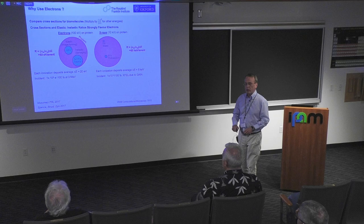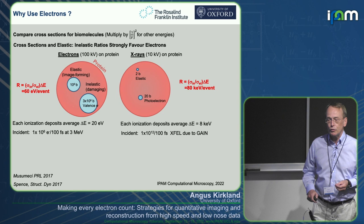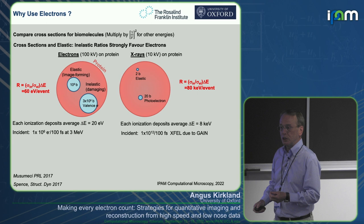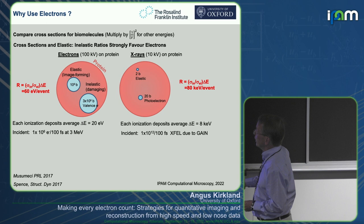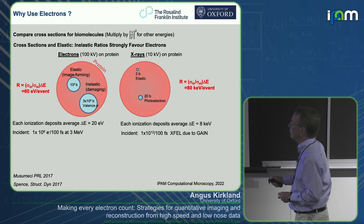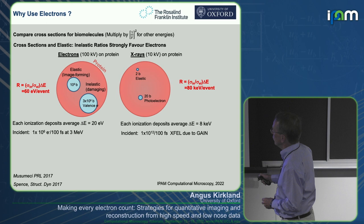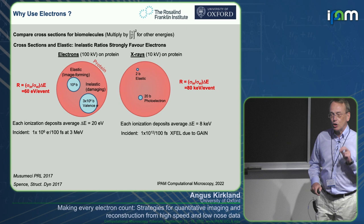I've plotted here a protein — a physicist's view, so it's a large red circle — and I've plotted on top of that the cross-sections for elastic collisions, which are the image-forming, useful-structural-data collisions, and the inelastic collisions, which are the damaging ones. I've done that for electrons at 100 kilovolts and for X-rays at 10 kilovolts. The electron cross-sections are much larger: 10 to the 8 barns elastic and 3 by 10 to the 6 barns inelastic, compared to X-rays at about 2 barns and 20 barns.